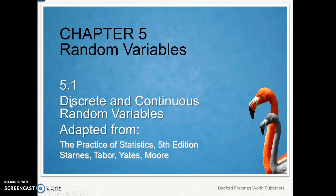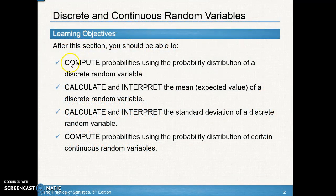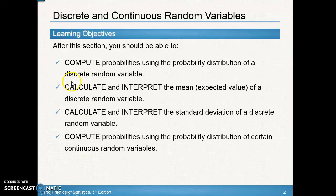Welcome to Unit 5, where we're going to discuss continuous and discrete random variables. This will be a continuation on the probability from Unit 4. We're going to take a look at probabilities using a probability distribution table, and we'll look at the difference between discrete and continuous when discussing random variables.